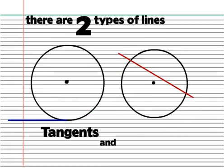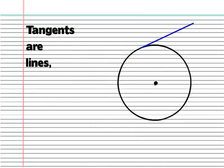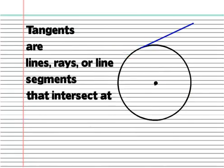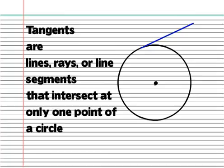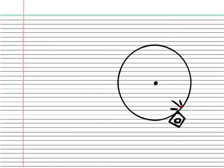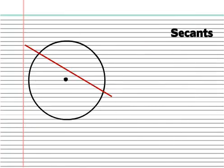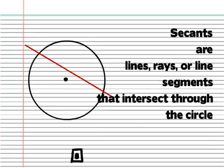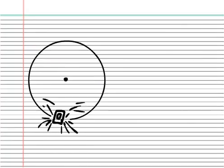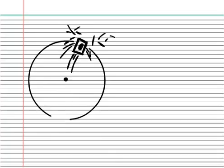Tangents and secants. Tangents are lines, rays, or line segments that intersect at only one point of a circle, like a driver grazing the side of a large column. Secants are lines, rays, or line segments that intersect through the circle at two points, like a drunk driver driving through a large column.